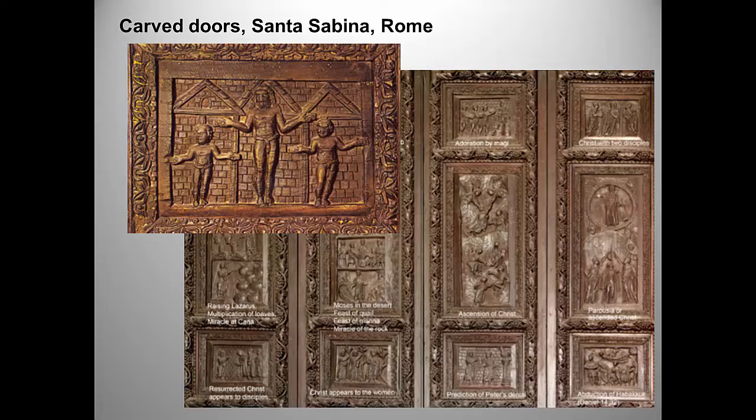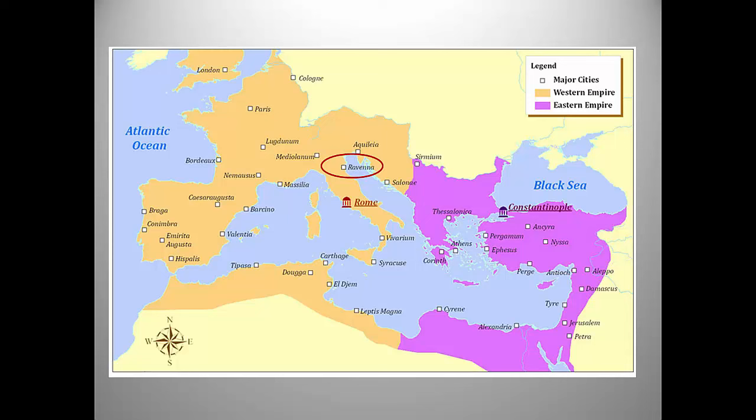In 330, Constantine moved the capital of the Roman Empire east to the town of Byzantium. He wanted a fresh start for his Christian empire, and Rome was filled with monuments to pagans. But the move also reflected geopolitical realities: the west was increasingly under siege from Germanic tribes, the east from the Persians, but Constantinople was more easily defended, especially by a navy. The east was richer than the west and therefore more important to defend. And Constantine liked having his own namesake capital. Constantine died seven years later in 337.